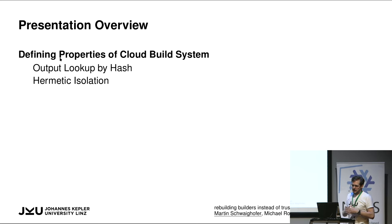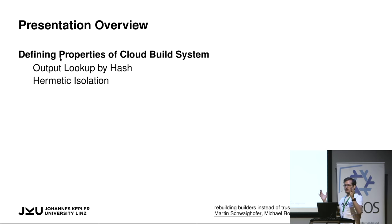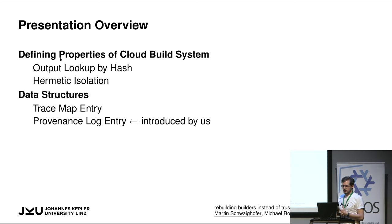The starting point is the properties of cloud build systems — Nix is one of these. They have a lookup mechanism using hashes: you have some hash that describes all inputs for a build step, and you use that to cache or retrieve the output. Input hash serves as an address for the output. The second property is hermetic isolation, which tries to isolate the build step from the rest of the system. The core data structure I'm calling a trace map entry is basically an input hash and an output hash together.